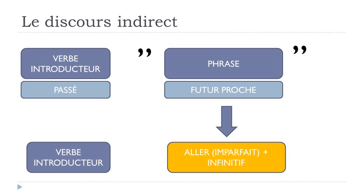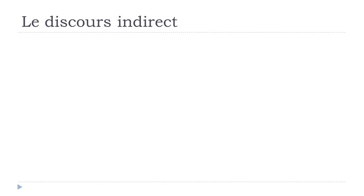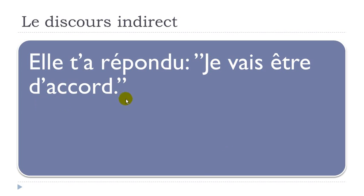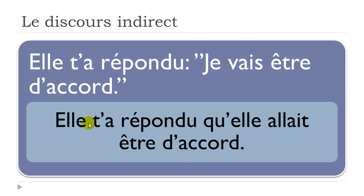If the second part has futur proche — aller + infinitif — it becomes aller at the imparfait plus the infinitive. Example: elle t'a répondu je vais être d'accord. Je vais — present — with être infinitive. In indirect speech this becomes: elle t'a répondu qu'elle allait être d'accord. Only the verb aller changes, from present to imparfait form allait.